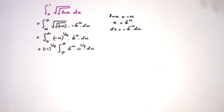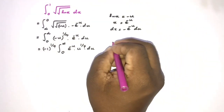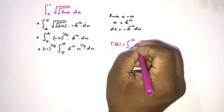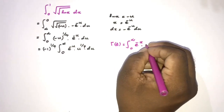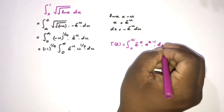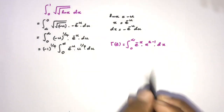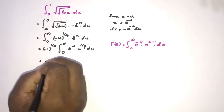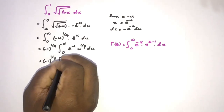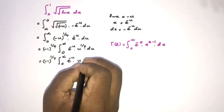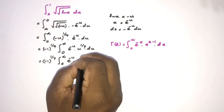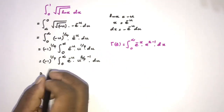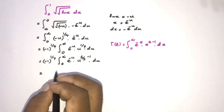Now we use the definition of the gamma function: gamma of c equals the integral from 0 to infinity of e to the minus u times u to the c minus 1 du. Here, comparing, we have u to the 5/4 minus 1, so this integral equals gamma of 5 over 4.